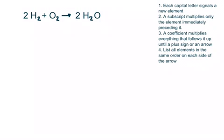First, each capital letter represents a new element. I'm drawing a dot under each of the elements represented in these formulas and this equation. So we have hydrogen and oxygen present on either side.